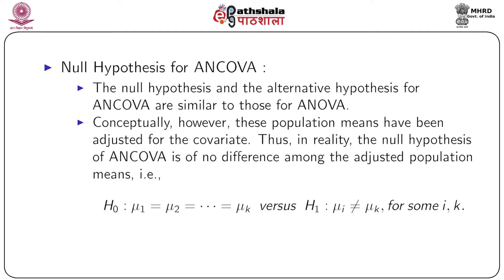We had discussed how an analysis of covariance model is developed, how we write it, and how we interpret each part of this model. In this module, we will talk about the null hypothesis. Once the model is fitted, by estimating coefficients using least squares or maximum likelihood, the logical next step is to test the significance of the factors and covariates in the model.